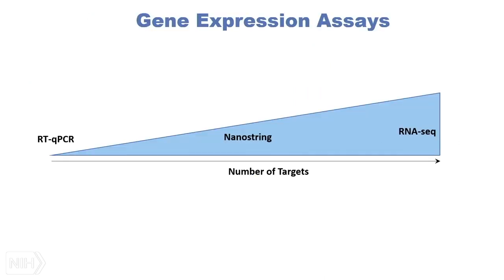In regards to gene expression, I like to think of it as an increasing number of targets that you can detect with these methods progressively. With real-time quantitative PCR, it is used for detection of a small number of genes — six to ten genes on average — but it is a very specific test used frequently to validate findings from other gene expression methods. NanoString, which we have been using for about six years, can have panels of up to 800 genes with customizable panels. And RNA-Seq is the whole transcriptome sequencing.